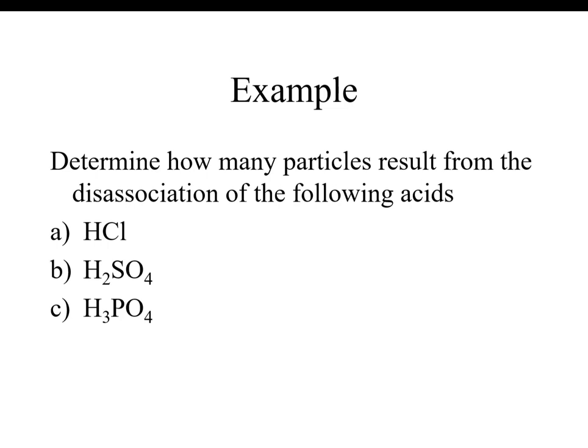How many particles result from the dissociation of these acids? Hydrochloric acid (A) dissociates into two particles. Sulfuric acid (B) has two hydrogens and one sulfate polyatomic ion, so it dissociates into three particles. Phosphoric acid (C) has three hydrogens and one phosphate ion, dissociating into four particles.